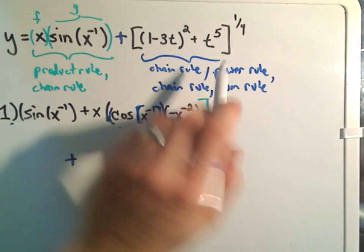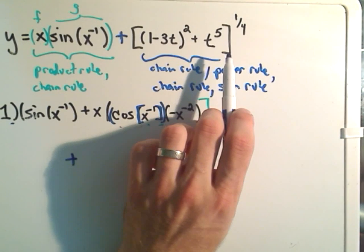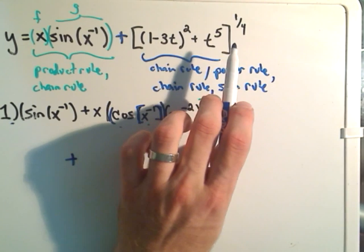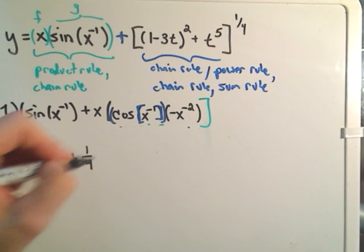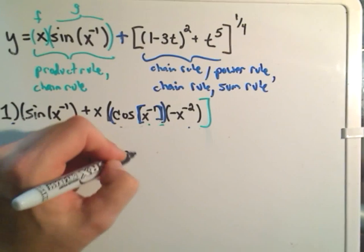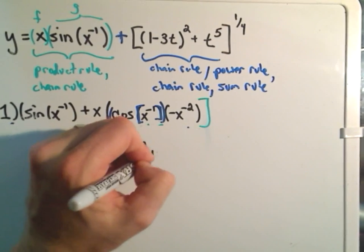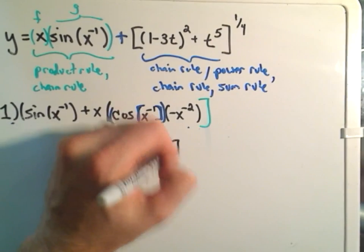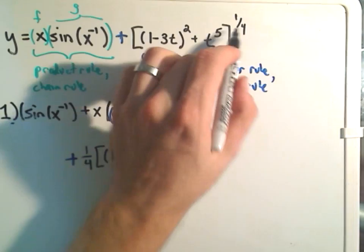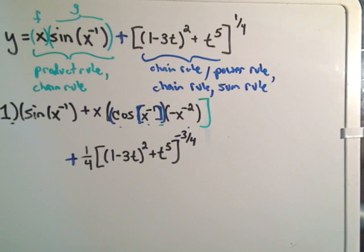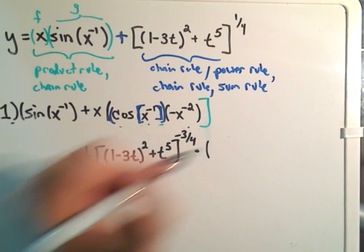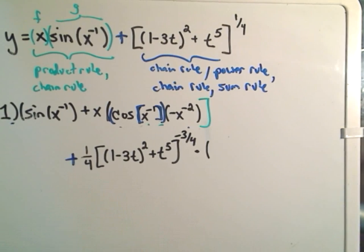Okay? And now, let me do the other part. So, if I take the derivative of the 1 minus 3t squared plus t to the fifth, all raised to the 1 fourth. The first thing that happens is the 1 fourth will come out front. We'll leave all the inside stuff alone. And we have to take one away from the exponent. So, if you subtract 4 over 4, we'll get to the negative 3 over 4 power.